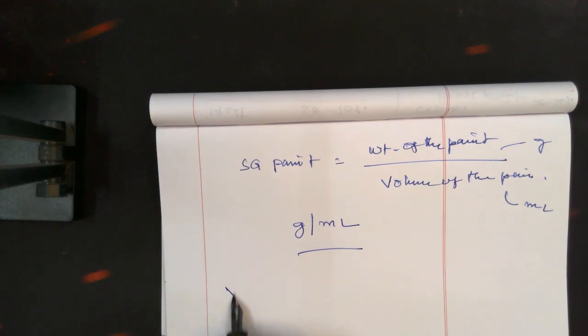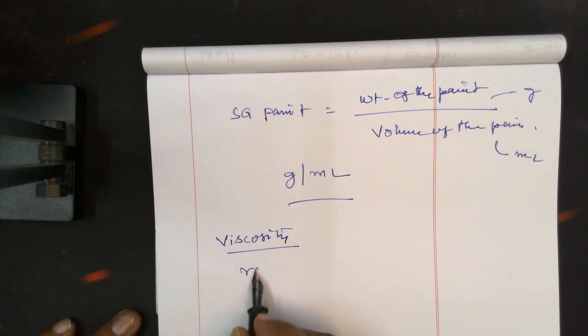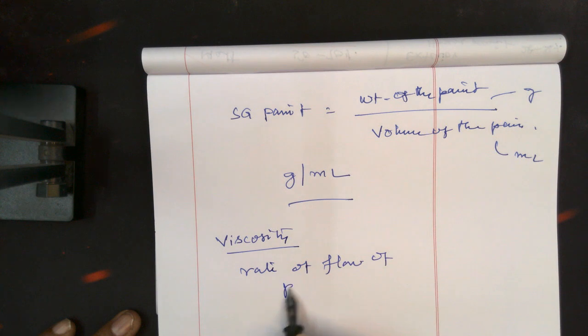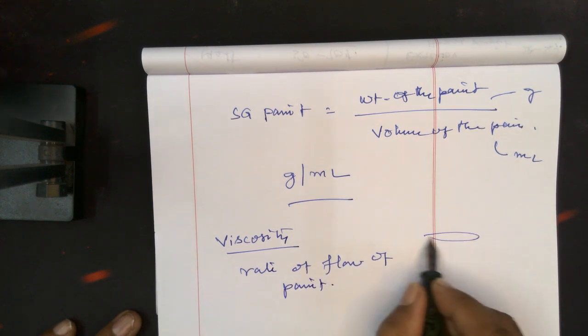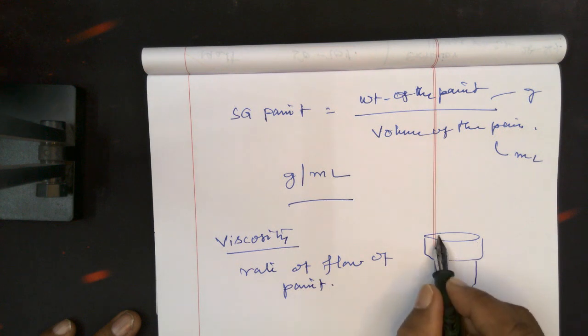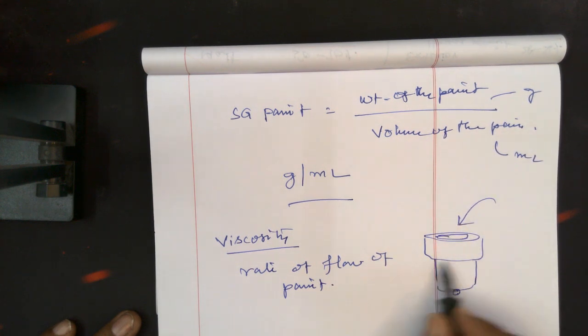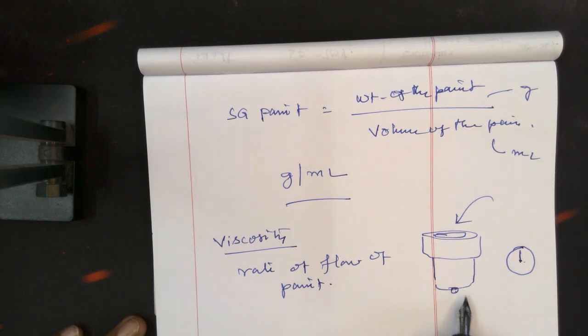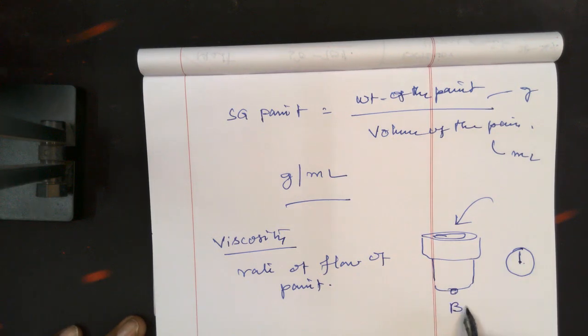The viscosity of the paint - it is the rate of flow of liquid or paint. Actually, you have a Ford cup, also called a flow cup. It will be like this, with a small orifice. It is a fixed volume. Here you have to add the liquid and calculate the time taken to completely empty this small vessel. This is called Ford cup B4.